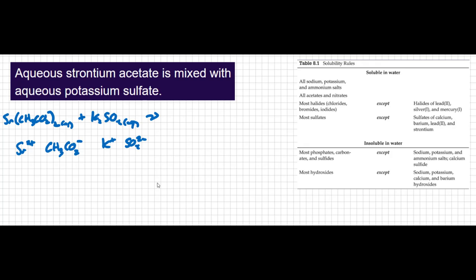We have two sets of dance partners and we're going to swap partners. The strontium is going to dance with the sulfate — I have a +2 and a −2, so they come together to make SrSO₄. The potassium and acetate come together with a +1 and −1 to make KCH₃CO₂. Now we balance it: there are two acetates and two potassiums on the reactant side, so we need two potassium acetates on the product side. Everything else is balanced.